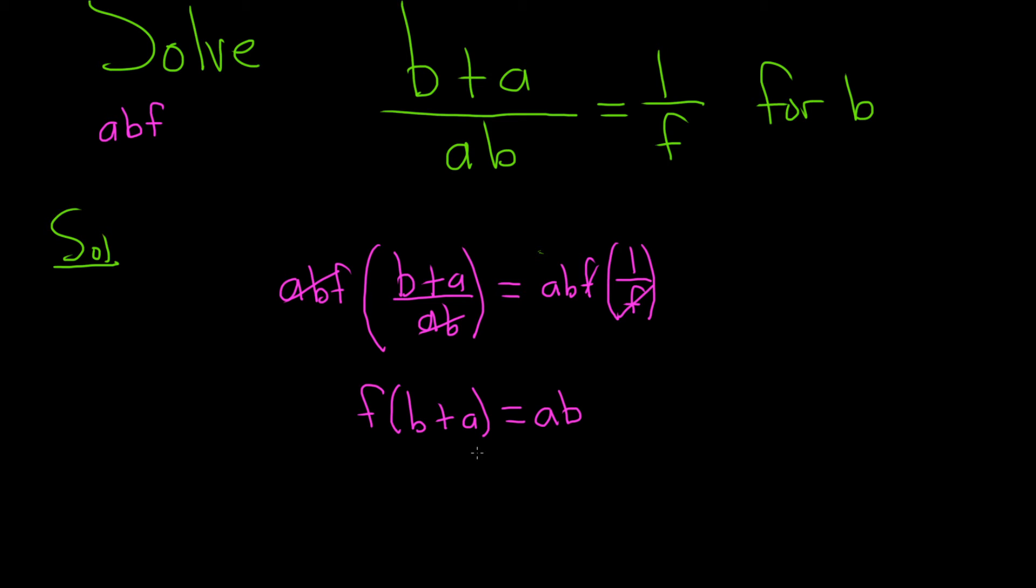So now we're still looking for b. And it's still tough because we have a b on the right hand side. And we have a b inside this parentheses. So we need to distribute. Let's do that. So f times b is fb. And then f times a is fa. And this is equal to ab.